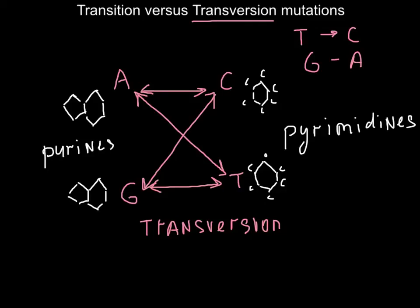Now, how to memorize this. On the right side you see pyrimidines — that's a long word — and these bases have only one ring. On the left side we have purines — that's a short word — but these are the large bases with two rings. So it's easy to remember: one-ring bases have a long name, and two-ring bases have a short name. I think you won't forget this.